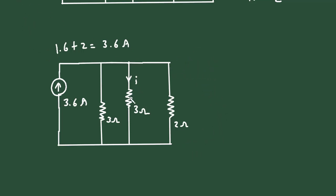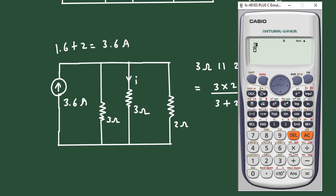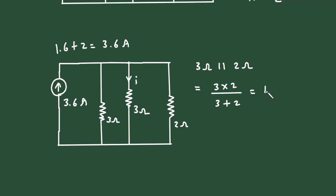Here we can see this 3 Ohm and this 2 Ohm are connected in parallel. We will skip this 3 Ohm resistor because we have to find current I, so this will be 3 Ohm parallel with 2 Ohm, which equals 3 multiplied by 2 divided by 3 plus 2, giving 1.2 Ohm. Let's make it a single resistor.